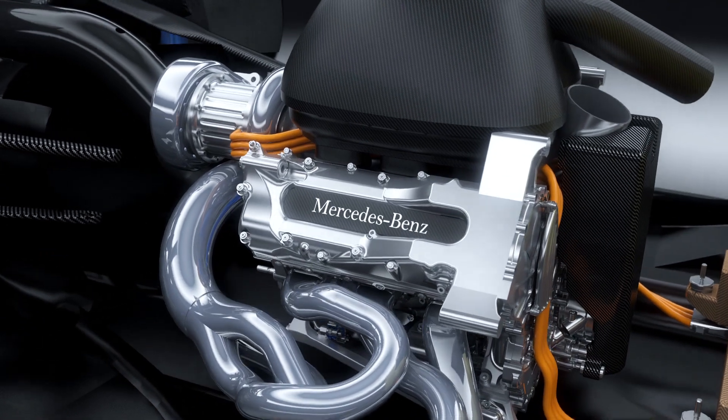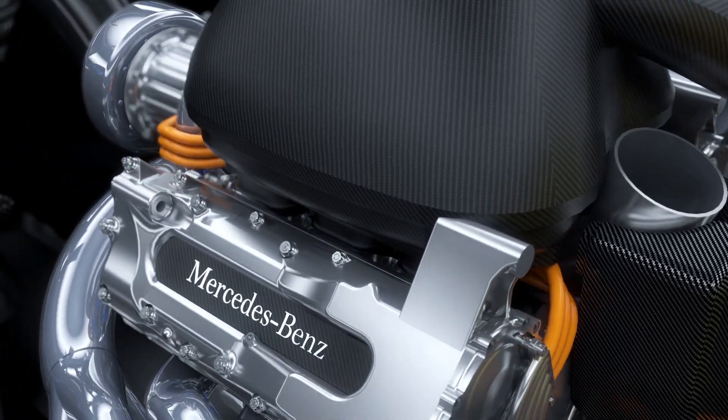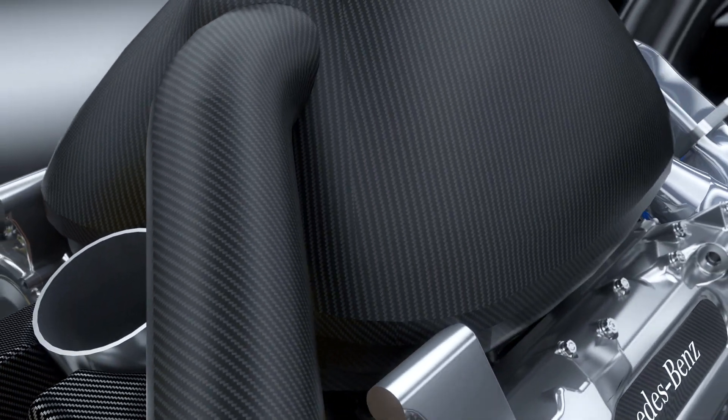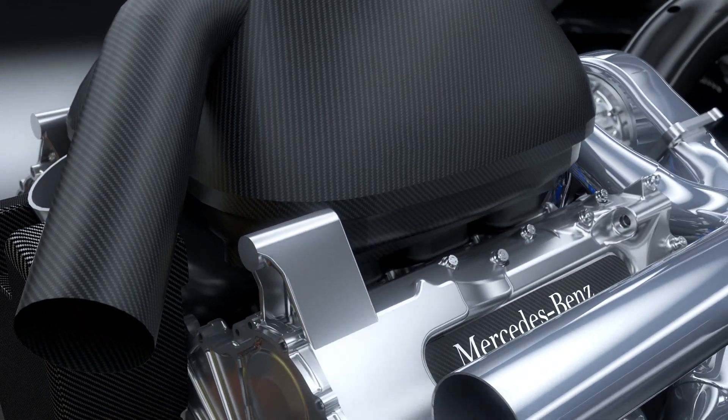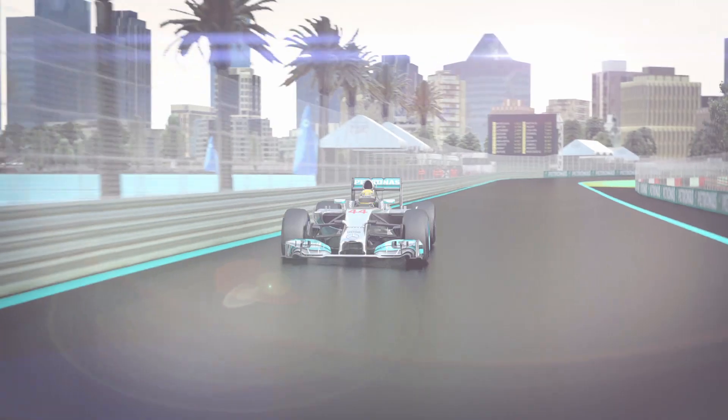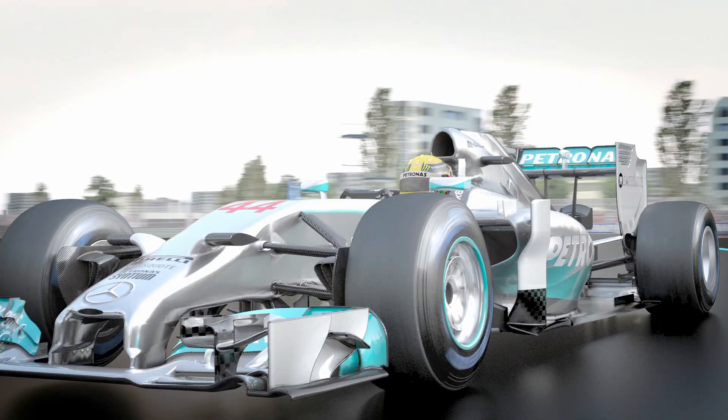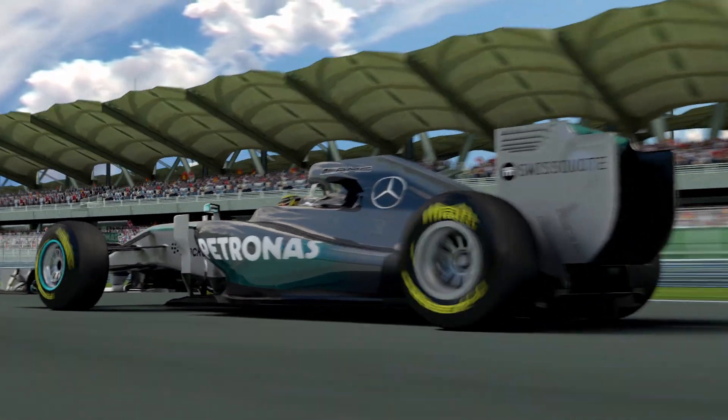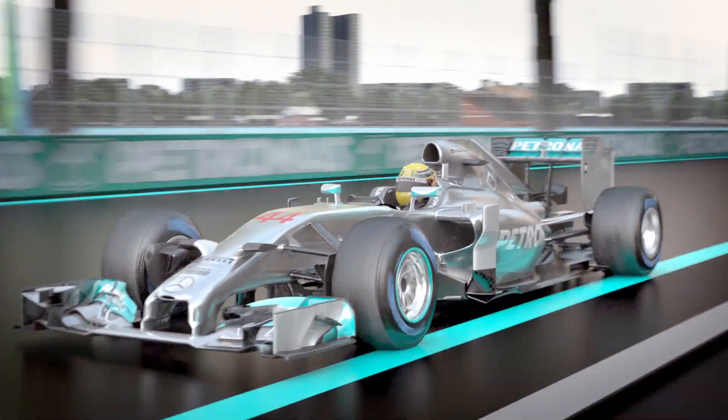Overall, the new power unit is over 30% more energy efficient, so if you use this technology in your road car, it would cost you just €40 to fill your tank instead of €60, and you would enjoy more performance too. The PU106A hybrid power unit, state-of-the-art technology at the heart of the winning Mercedes F1W05 hybrid race car.